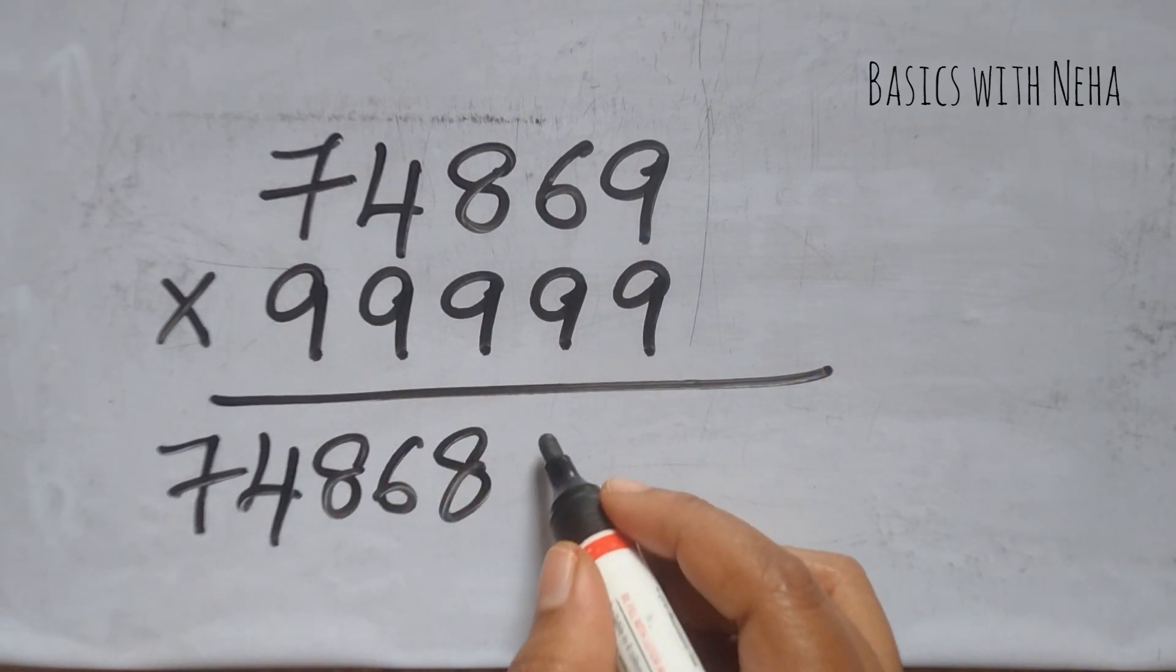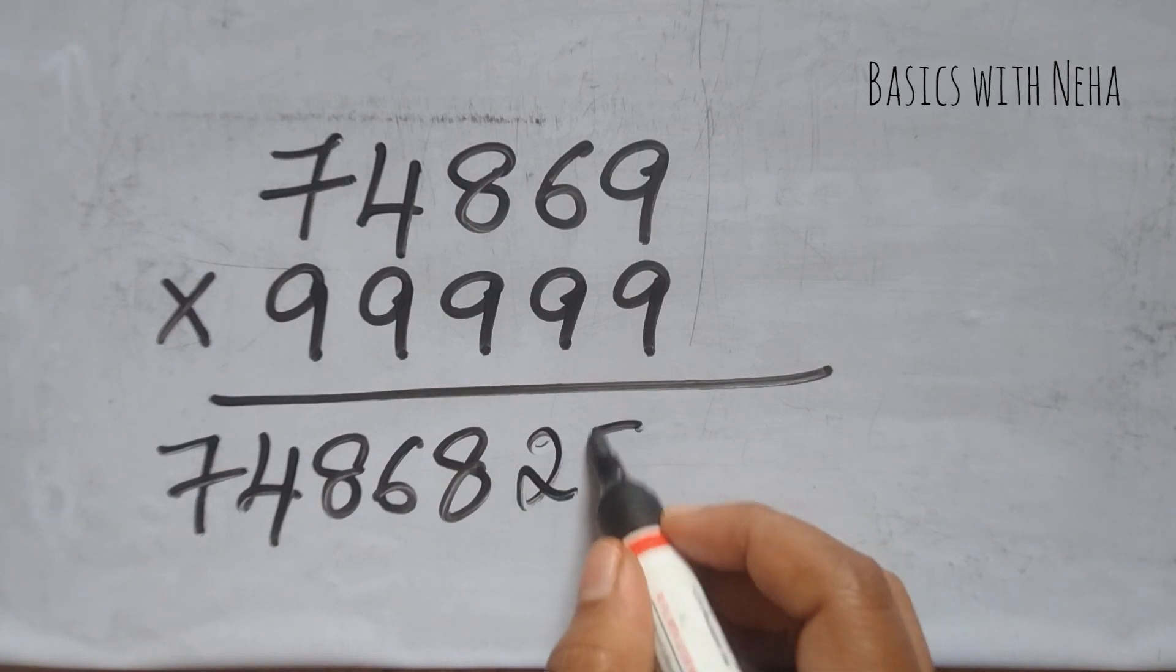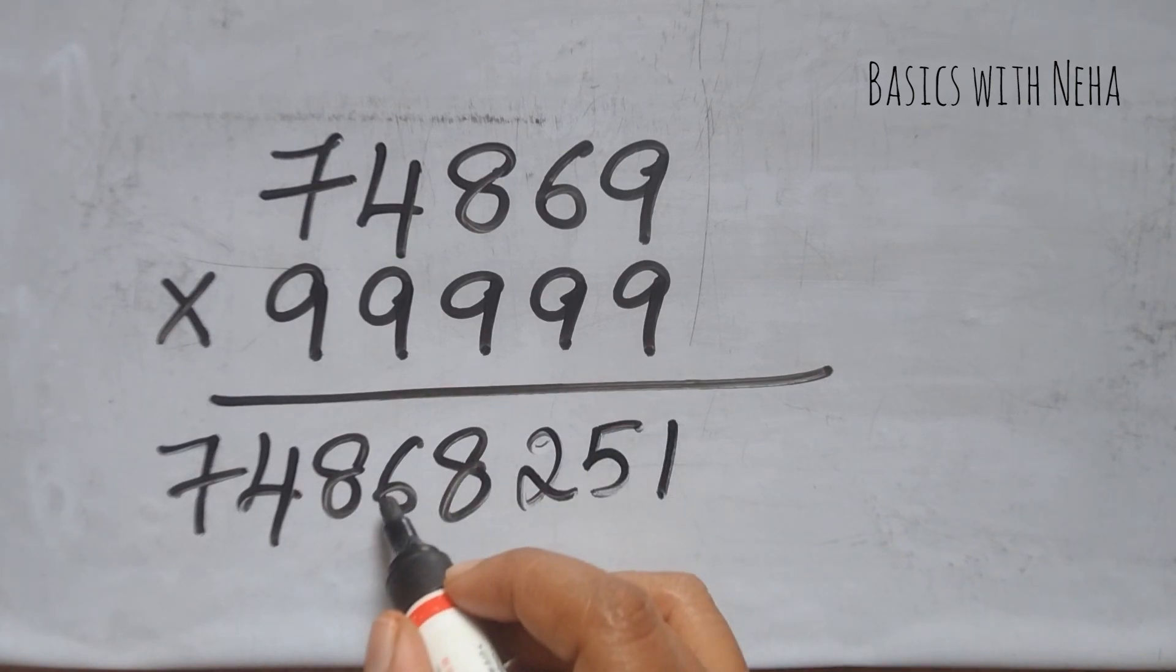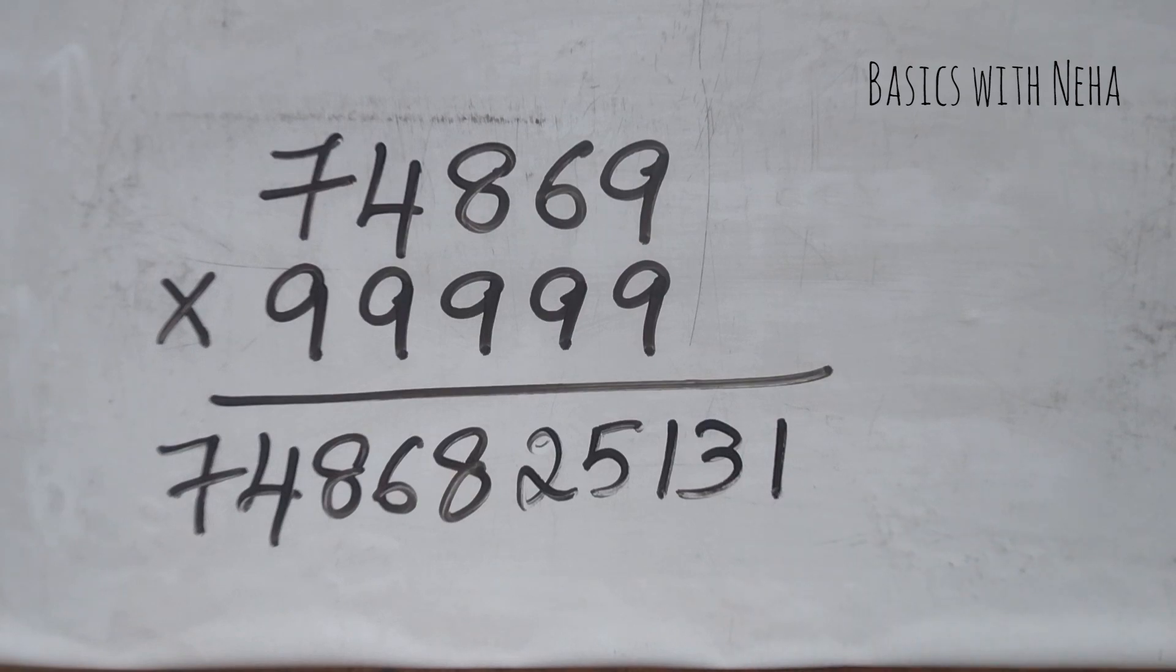Now 9 minus 7 is 2, 9 minus 4 is 5, 9 minus 8 is 1, 9 minus 6 is 3, 9 minus 8 is 1.